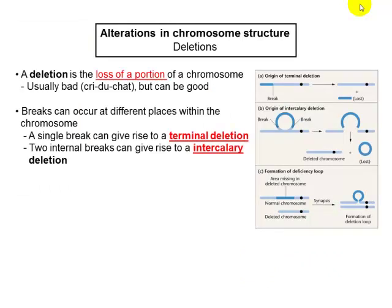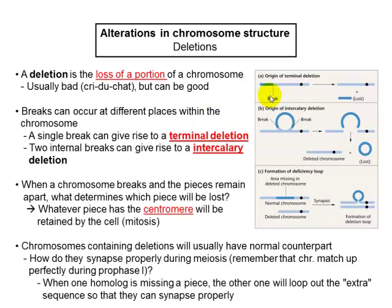So when talking about a deletion, you're talking about a loss of a portion of a chromosome. Deletions can happen in different ways. You can have a terminal deletion, which means it's at the end of the chromosome — terminal, close to the tip. Or you can have breaks that are within the chromosome — these are called intercalary breaks, occurring in the middle of the chromosome.